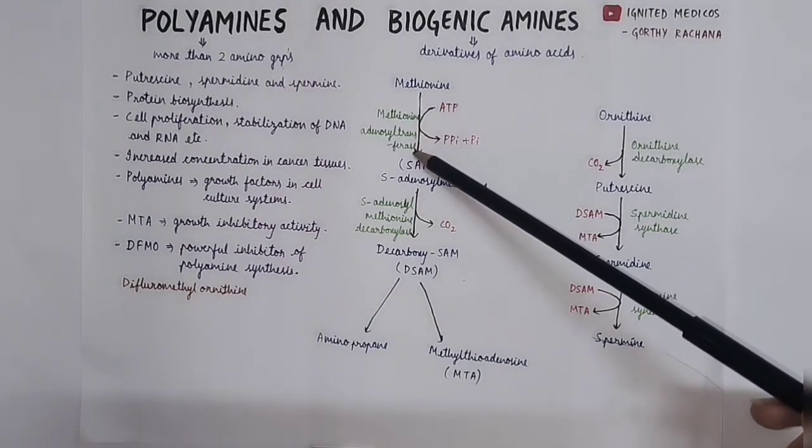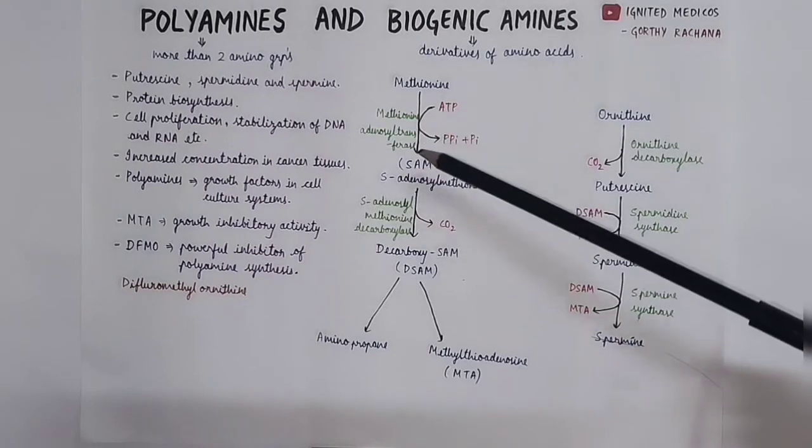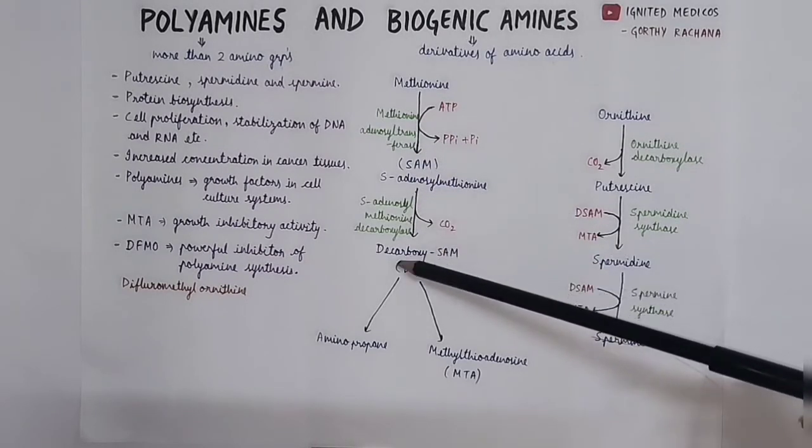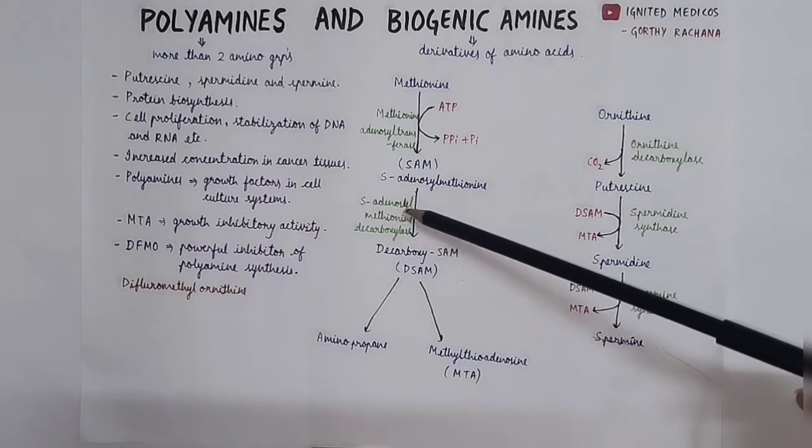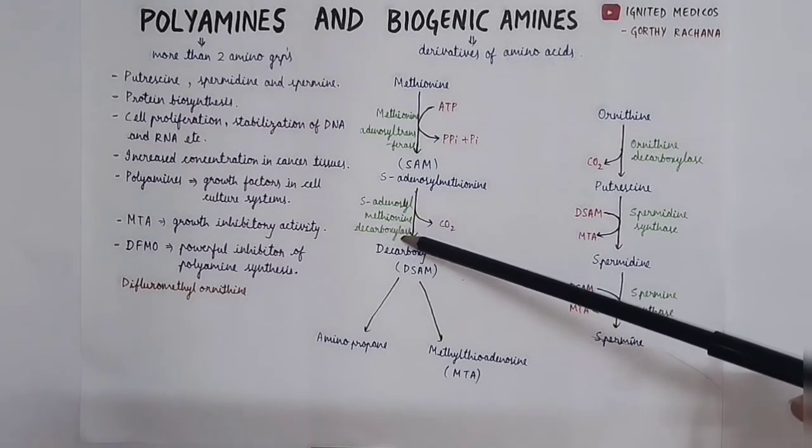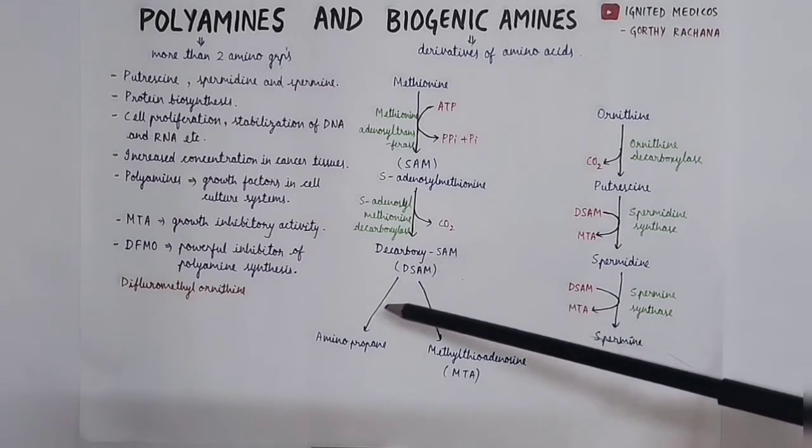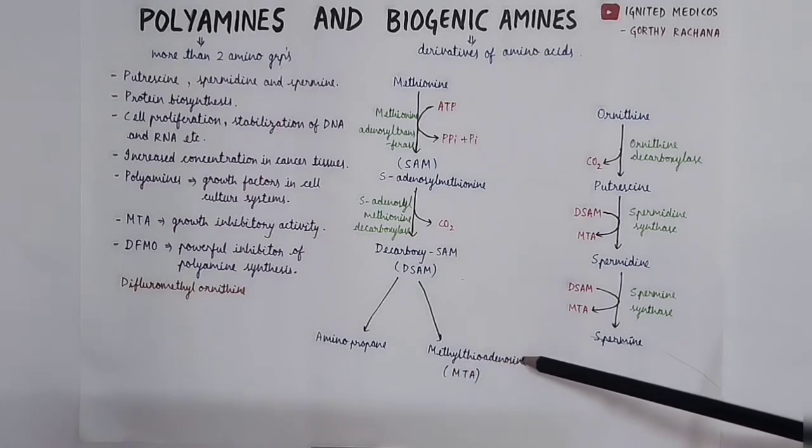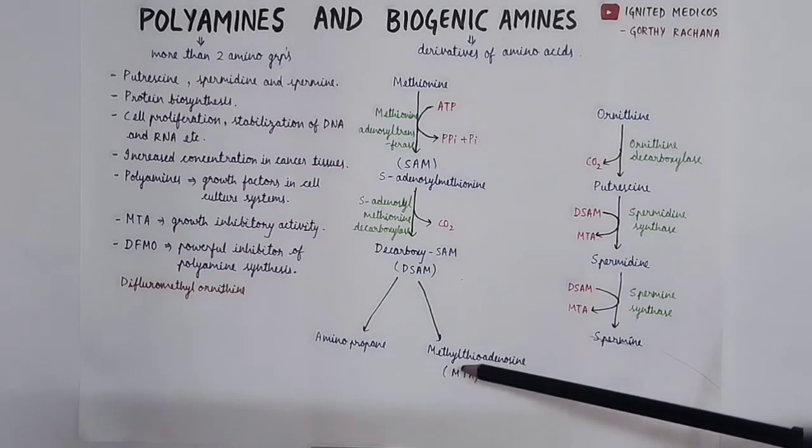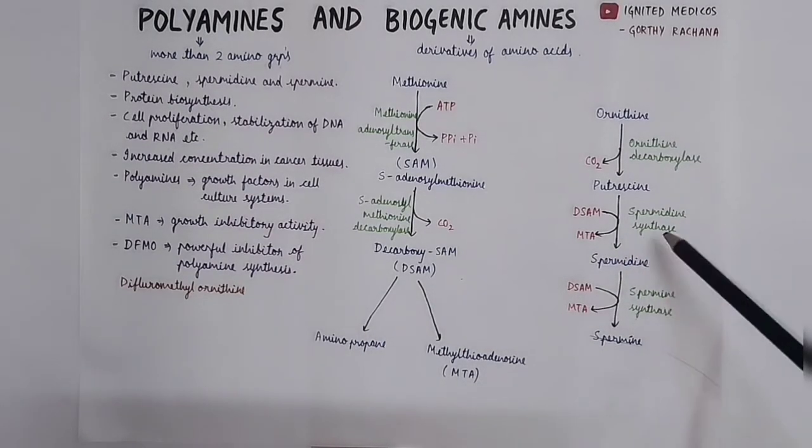Methyl adenosyl transferase enzyme converts methionine to SAM. SAM is then converted to decarboxyl SAM by the enzyme S-adenosyl methionine decarboxylase. Decarboxyl SAM is then converted to aminopropane along with methylthioadenosine MTA. This aminopropane which is formed here is added to these two reactions.